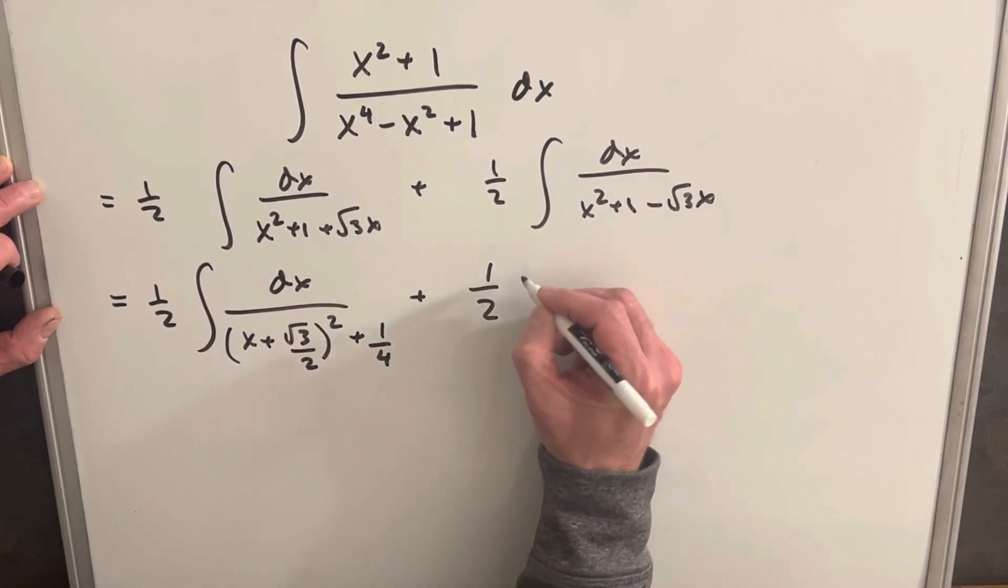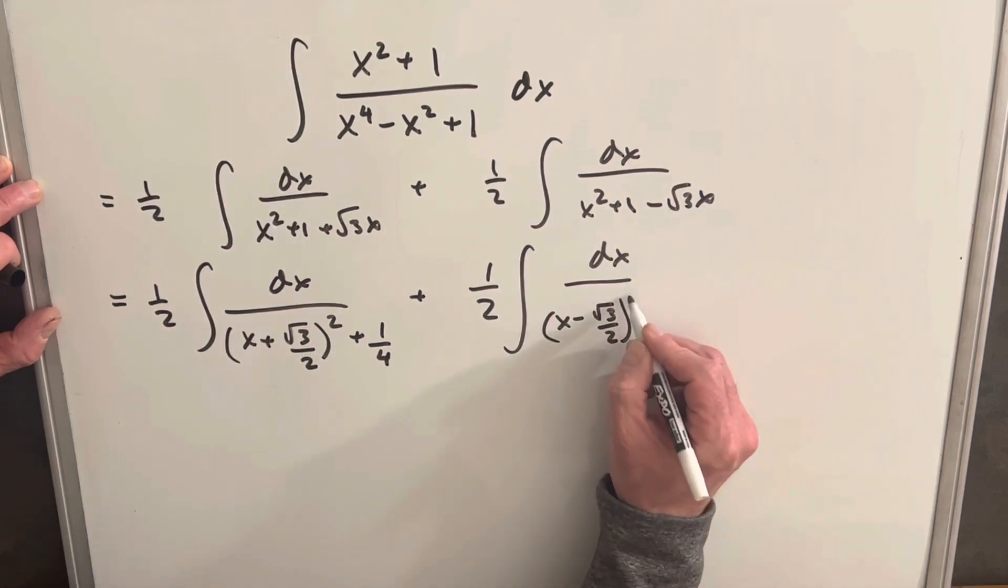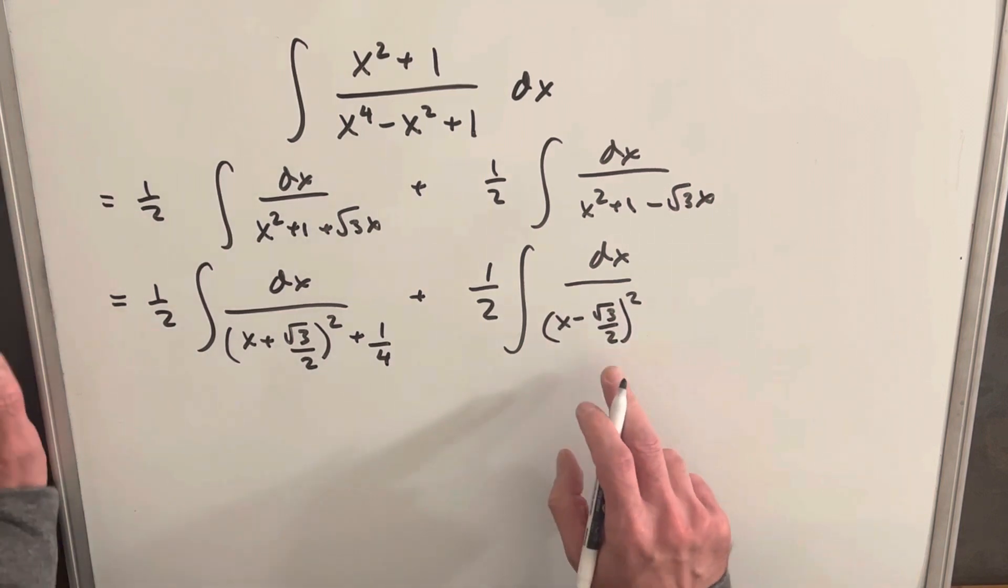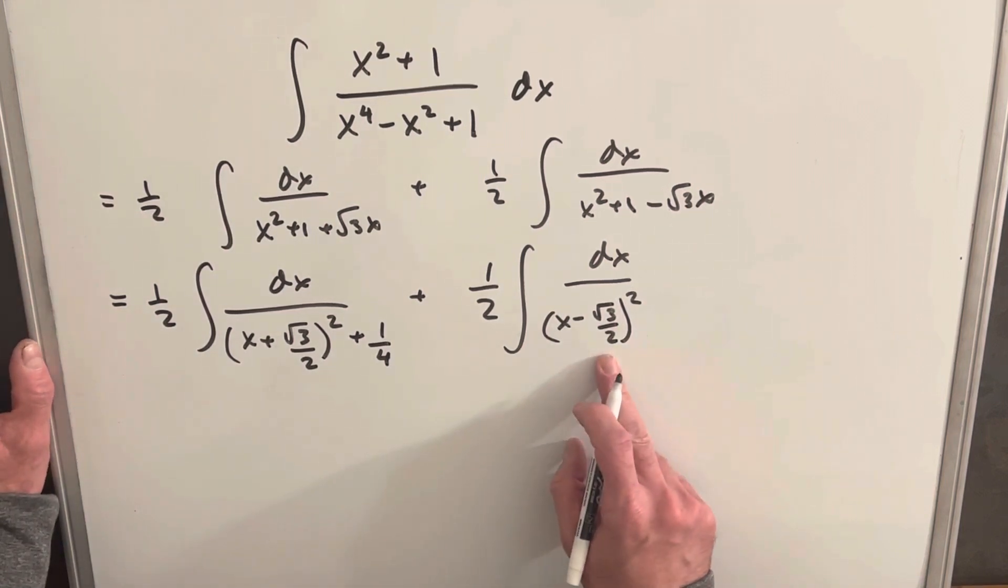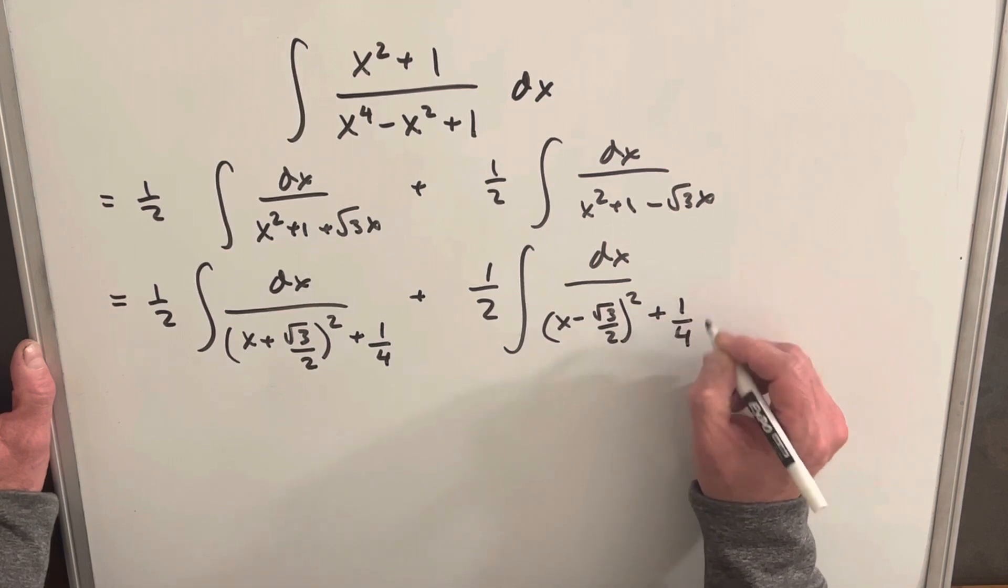Then, basically doing the same thing over here, we're just going to have x minus square root of 3 over 2 squared. Same situation where this term here is going to be 3 fourths, so we need to add a 1 fourth to get to 1.